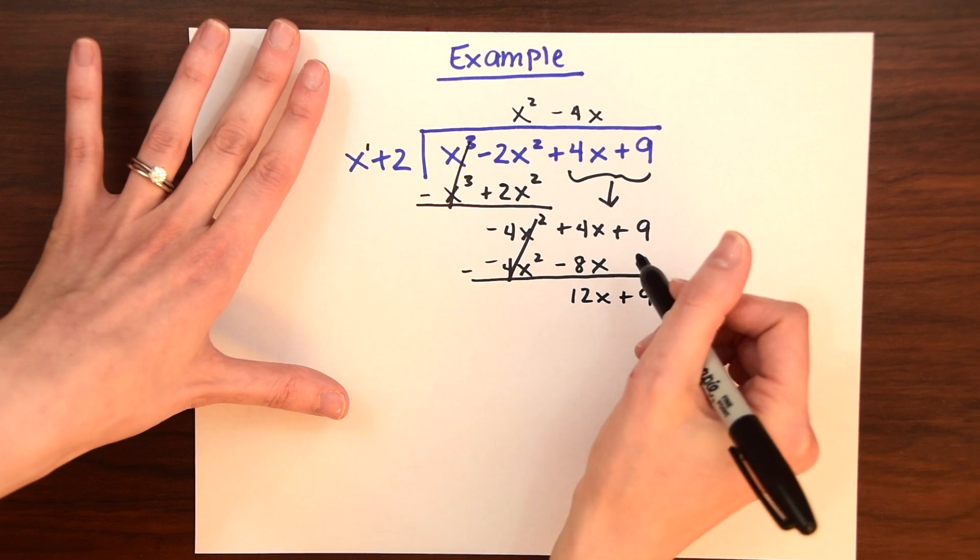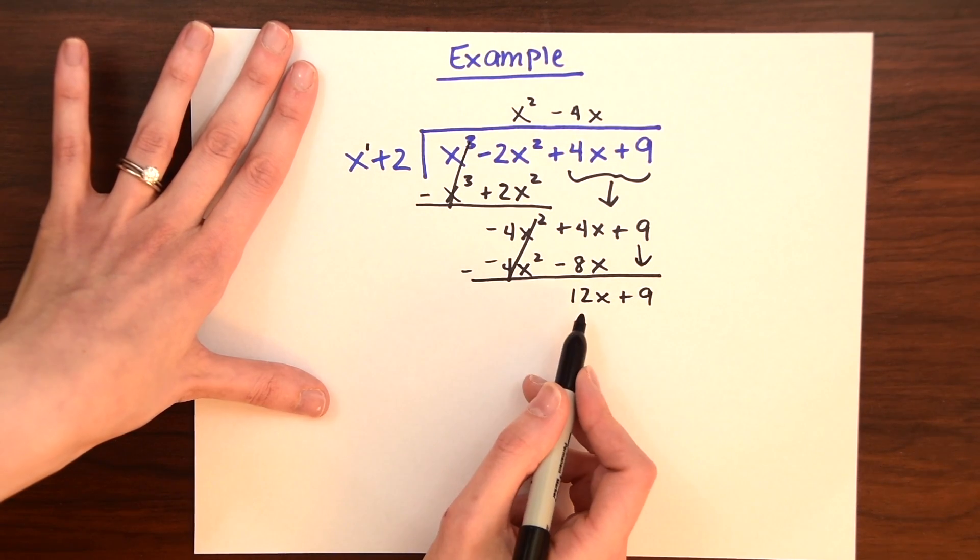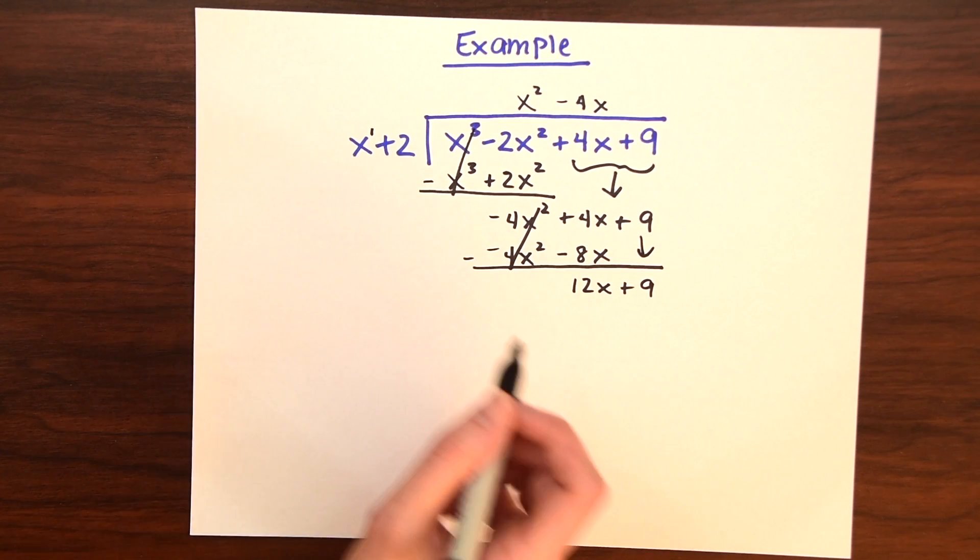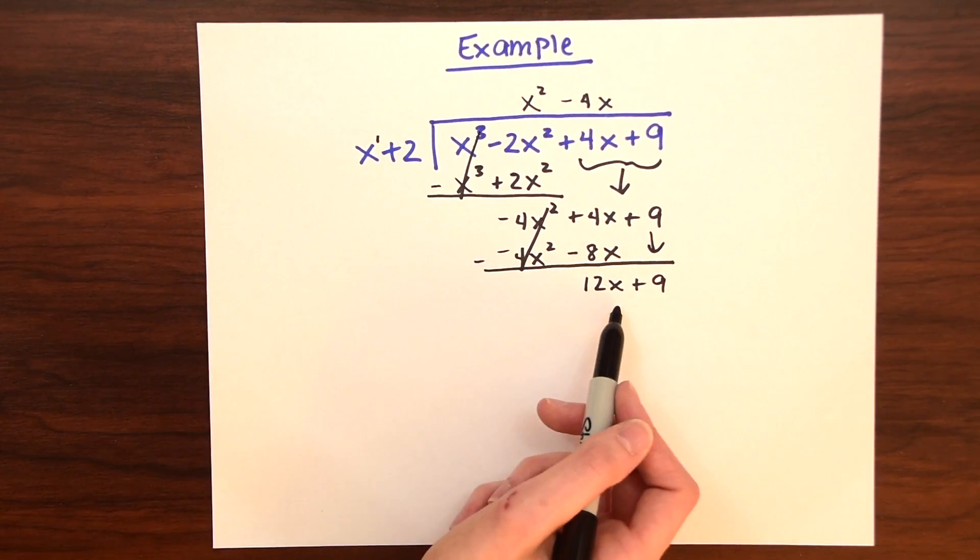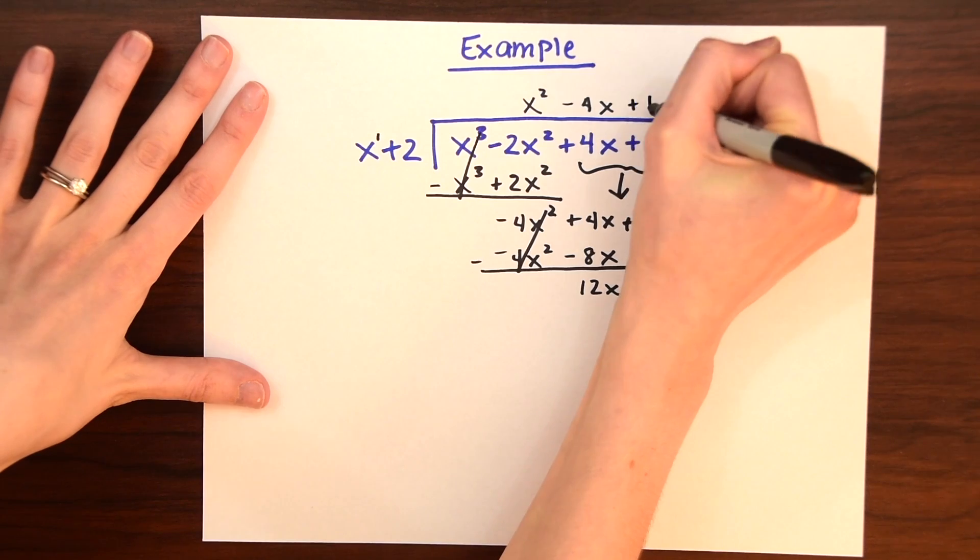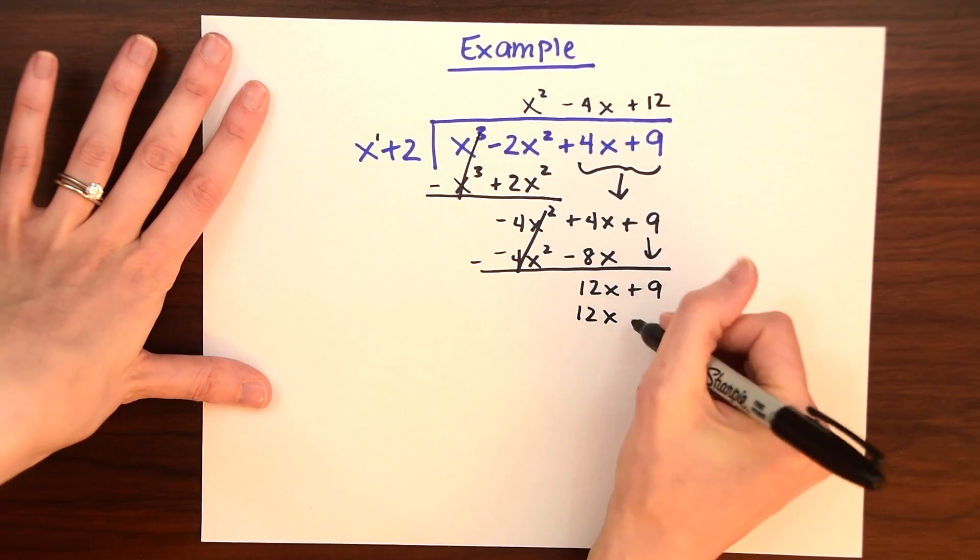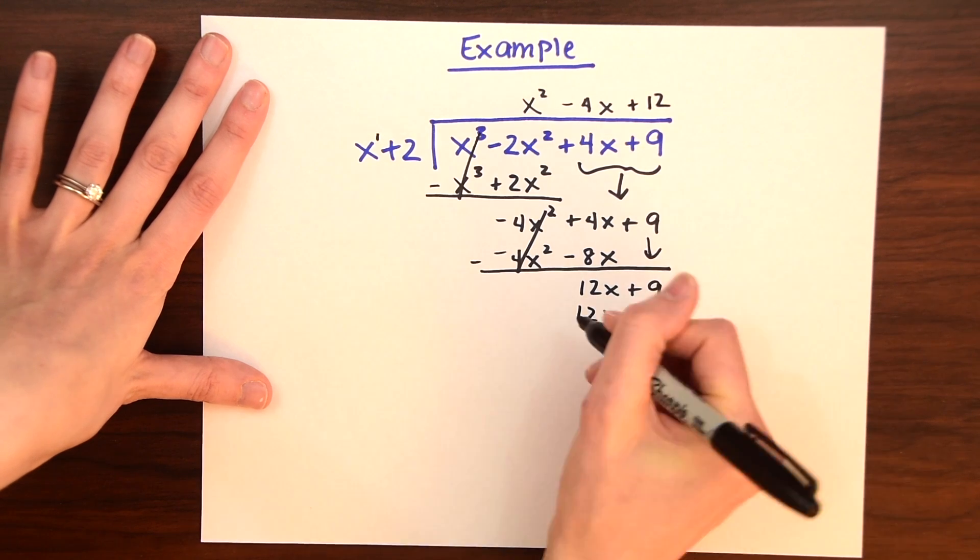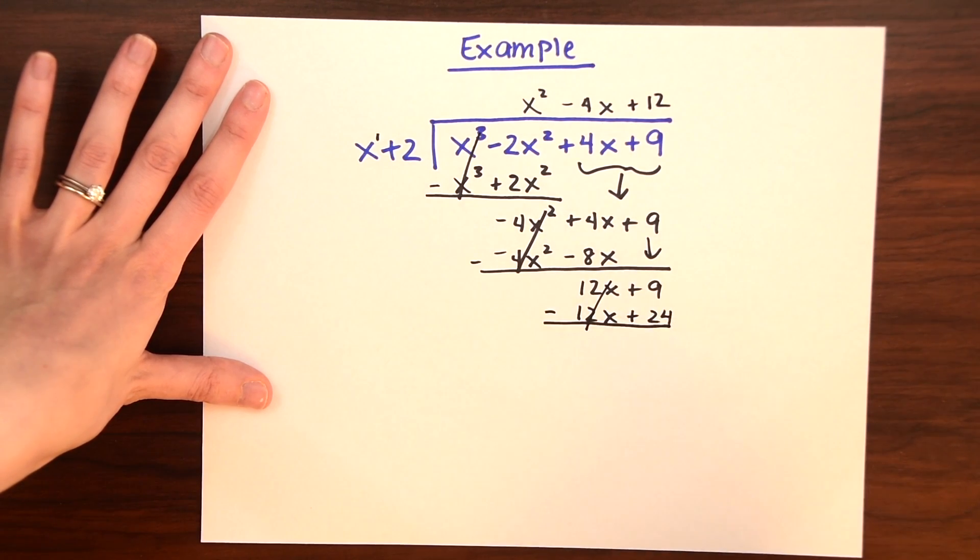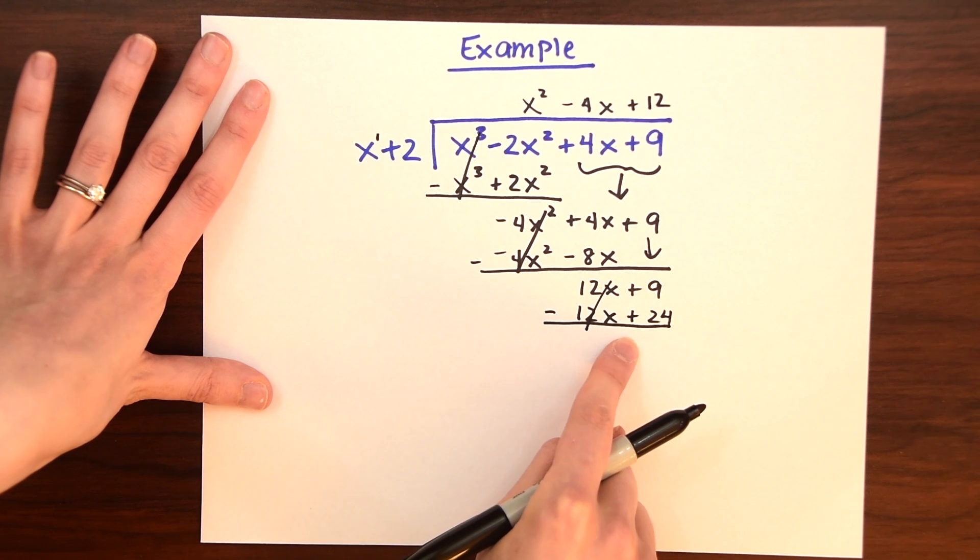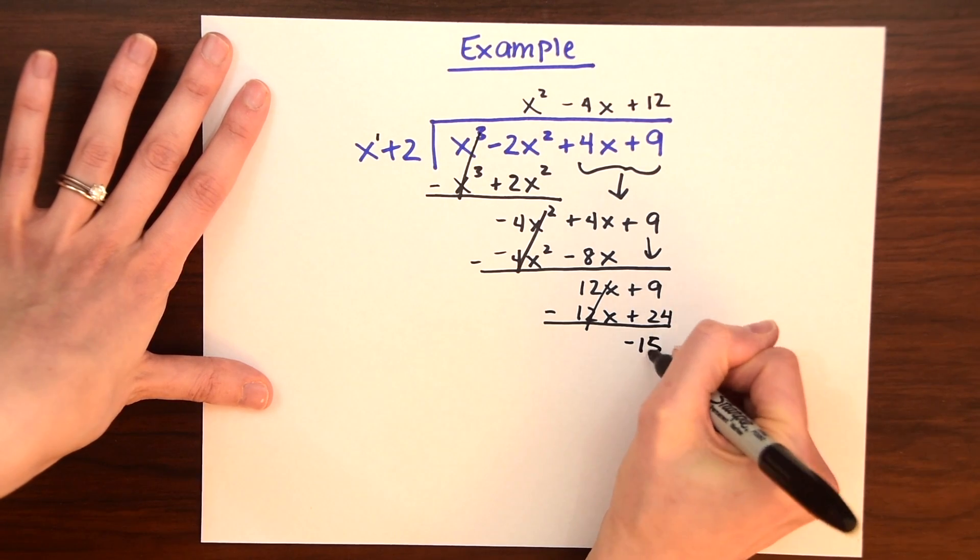So now, we just brought down this 9. So now, the last home stretch of our problem here. All right, how can we make, what can we multiply to x to get 12x? So that would just be the whole number 12. So 12 times x gives us 12x. And then 12 times 2 gives us 24. Subtract these two. So 12x minus 12x, that cancels out. And then 9 minus 24 is going to give us a negative number. It's going to give us minus 15.